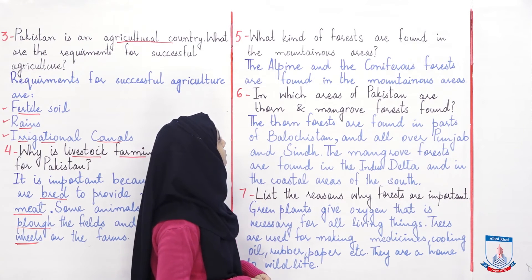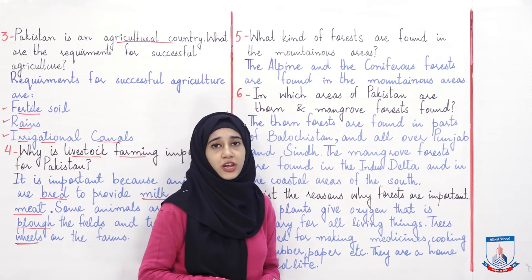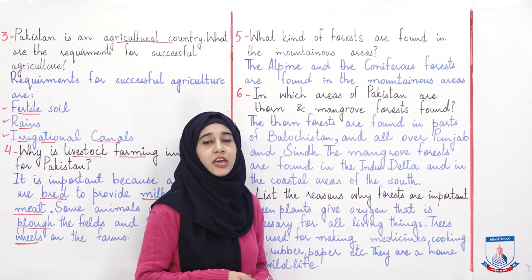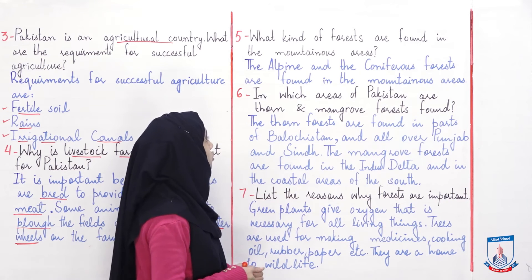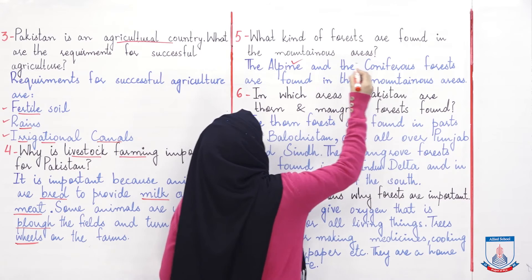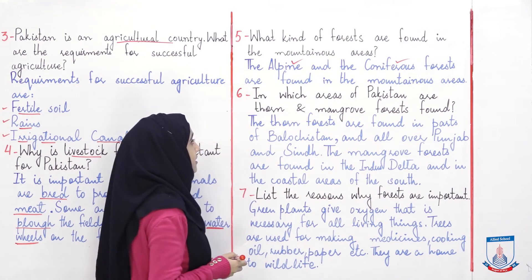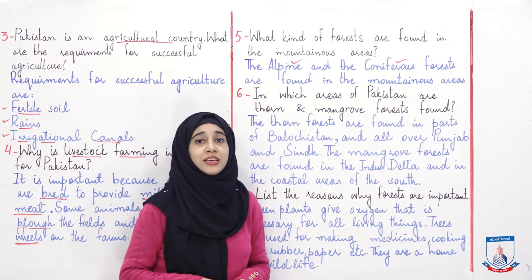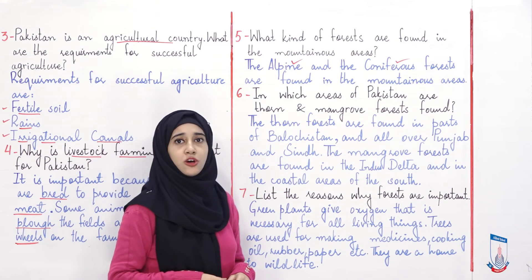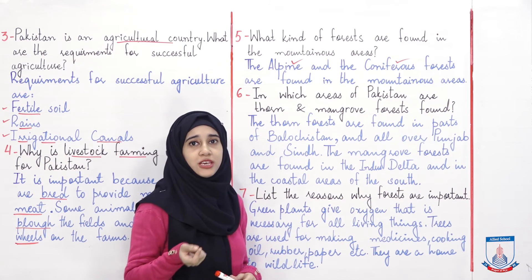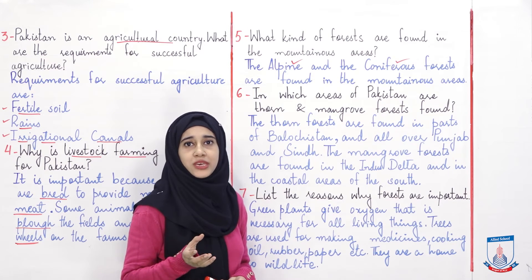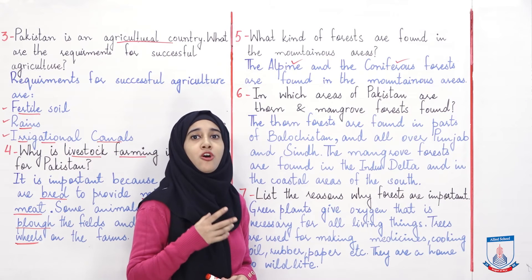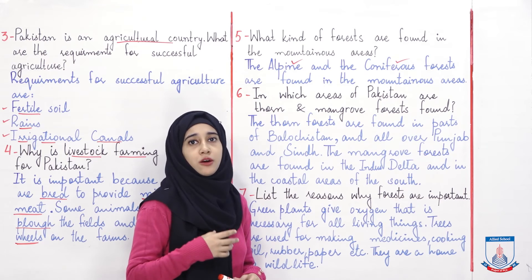What kind of forests are found in the mountainous areas? اب وہ آپ سے پوچھ رہا ہے کہ جو ہمارے ملک کے mountainous areas ہیں — جہاں پہاڑ زیادہ ہیں، جو پہاڑی علاقے ہیں — وہاں پہ کس طرح کے forests ملتے ہیں؟ So وہاں ملتے ہیں the alpine and the coniferous forests. ہمارے ملک کے پہاڑی علاقوں میں دو طرح کے forests ملتے ہیں: the alpine اور the coniferous. Coniferous کا نام آپ cones سے یاد رکھ سکتے ہیں — وہ cones جو آپ نے اکثر دیکھی ہوں گی، decorate بھی کی جاتی ہیں for decoration purposes — وہ آتی ہیں ان درختوں سے جو coniferous forests میں اگتے ہیں۔